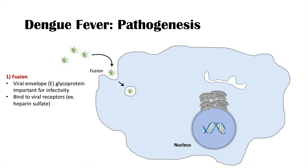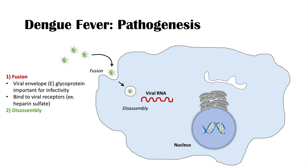Some of the viral receptors the virus attaches to include heparin sulfate located on the host cell. Once the virus enters the cell, it gets packaged into an endosome — an acidified vacuole — and eventually becomes disassembled into its viral RNA.